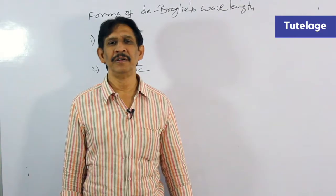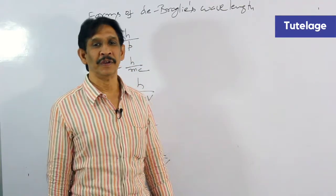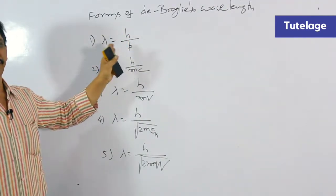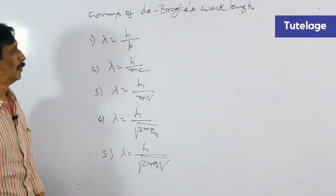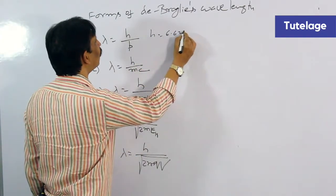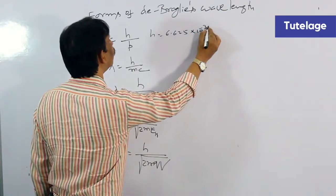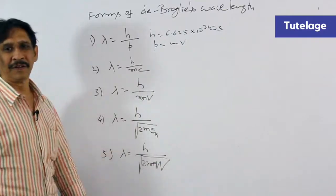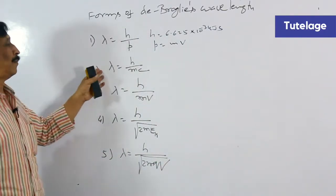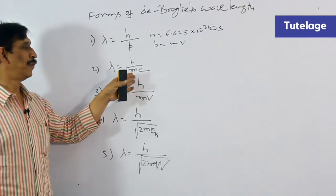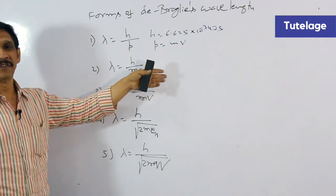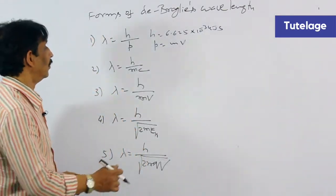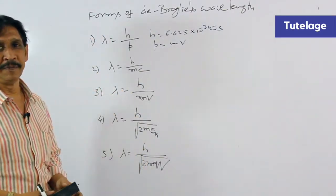In this video, we have learned the different forms of the De Broglie wavelength. Lambda is equal to h by p, where h is Planck's constant and p is the linear momentum. Planck's constant is 6.625 × 10⁻³⁴ joule-seconds, and linear momentum is the product of mass and velocity. Lambda is also equal to h by mc, where m is the mass of a photon and c is the speed of light — 3 × 10⁸ meters per second.